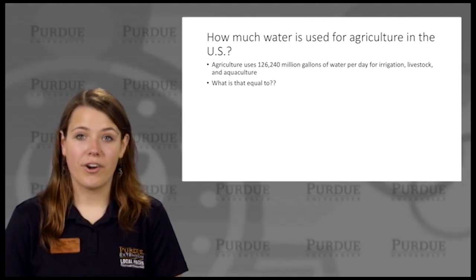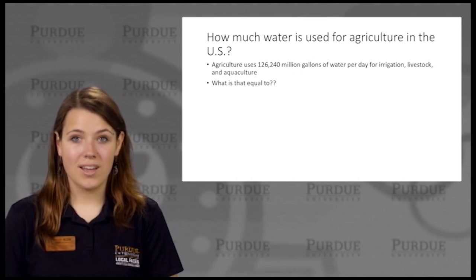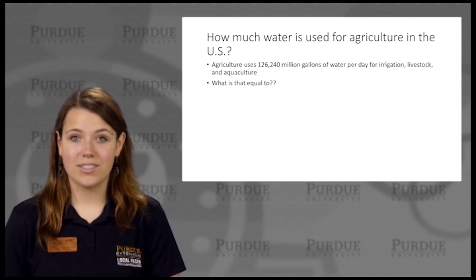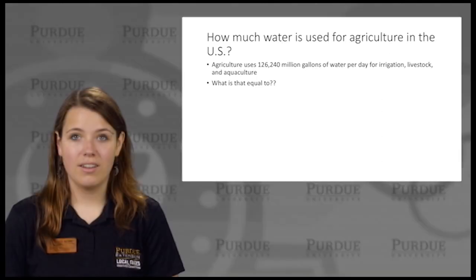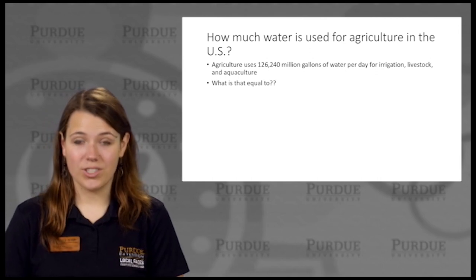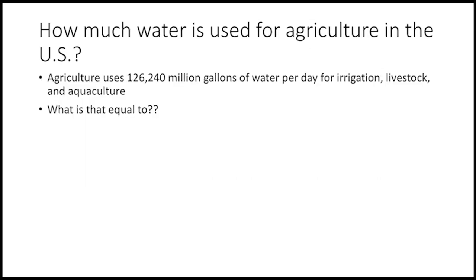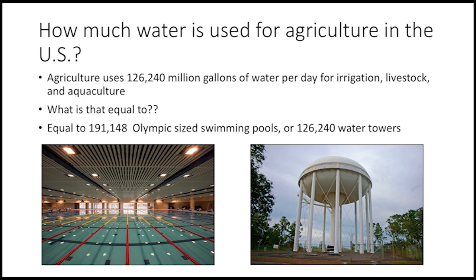Our breakfast used a lot of water and land, but how about all the food in the U.S.? How much water and land does that cost us? Agriculture is the process of growing our food. Agriculture uses 126,240 million gallons of water per day — that's just in one day. That's equal to 191,148 Olympic-sized swimming pools, or 126,240 water towers.